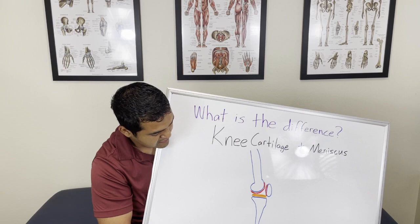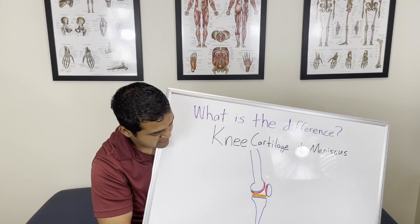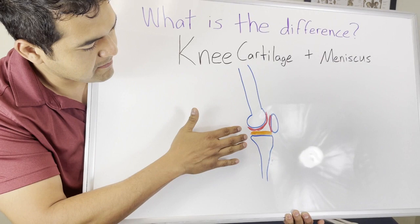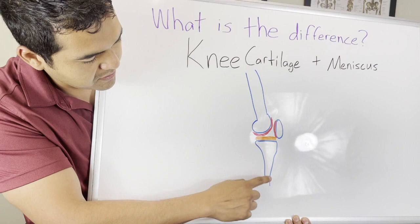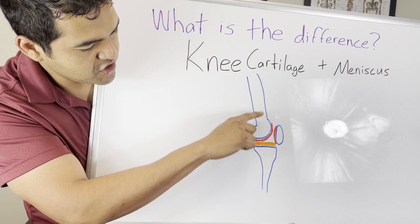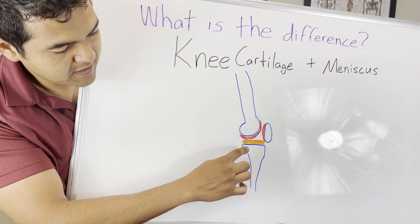Let's talk about the difference between knee cartilage and the meniscus. I've drawn a side view of the thigh bone and the knee bones here. Here's the thigh bone, that's the kneecap, and this is the shin bone, all in blue. In orange is the meniscus, and its job is to cushion the thigh bone and all the weight above it on the shin bone and the foot — more of a cushion than anything else, kind of like the discs in the spine.